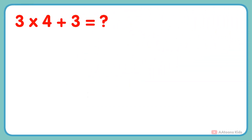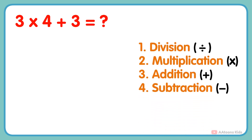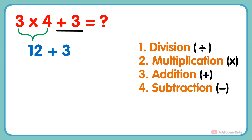What is 3 multiplied by 4 plus 3? In this problem, two operations — multiplication and addition — are given. So according to the order, we would first perform the multiplication: 3 multiplied by 4 gets 12. And next, add 3 to the result, and you will get your answer: 12 plus 3 equals 15.